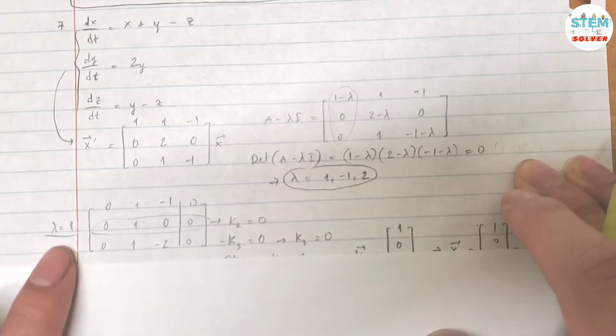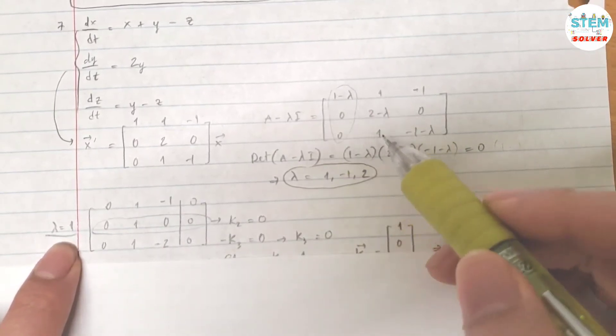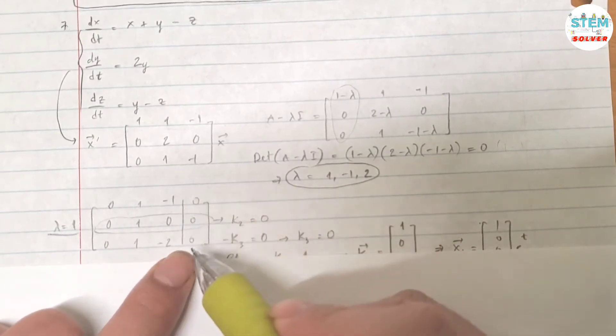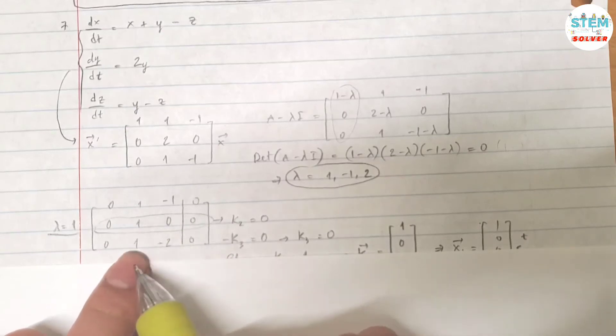For lambda equals 1, plug it into here, into this matrix. You will get this matrix and then augment it with 0. Normally you would reduce this down to a reduced row echelon matrix, but I know that this will give me infinite solutions, so I'm not gonna do row reduction.